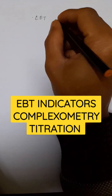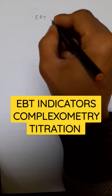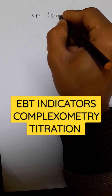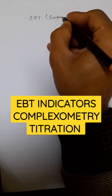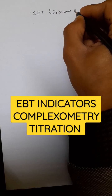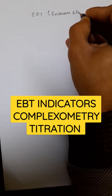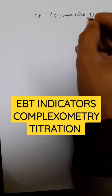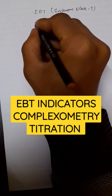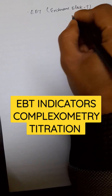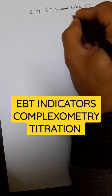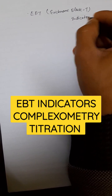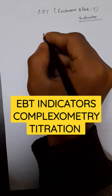This is the structure of EBT indicator. Full form is Eriochrome Black T. It is used as an indicator in complexometry titration.